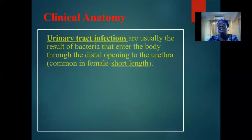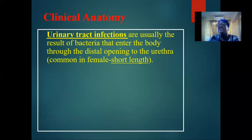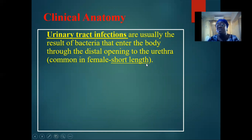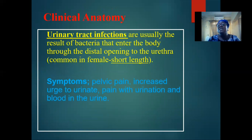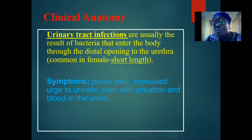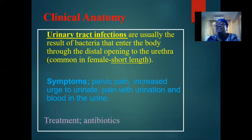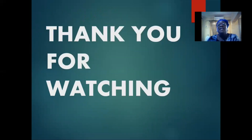For clinical anatomy, urinary tract infection is an infection that tends to enter the body through the opening of the urethra. Because the urethra in females is short, this tends to be more common in females. The infection goes through the opening and can move as far as the kidney. Symptoms include pelvic pain, increased urge to urinate, frequent urination that comes with pain, and blood may also be seen in the urine. The treatment option is the use of antibiotics. Thanks for watching this video — let's meet again.